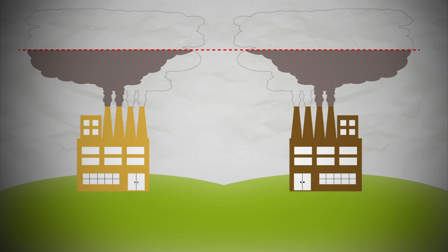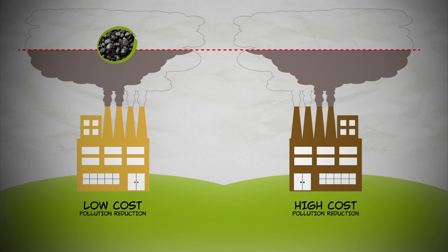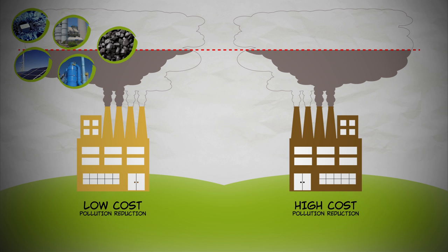But now imagine that one of the plants can reduce pollution at a lower cost than the other. Perhaps it's newer, or it uses a different type of coal. Or maybe there is some other technology for reducing pollution that the government didn't consider. Or perhaps the product produced in one of these factories has a less polluting substitute that we can easily switch to. Ideally, we want to reduce pollution where reducing pollution has a low cost, and less where reducing pollution has a high cost.